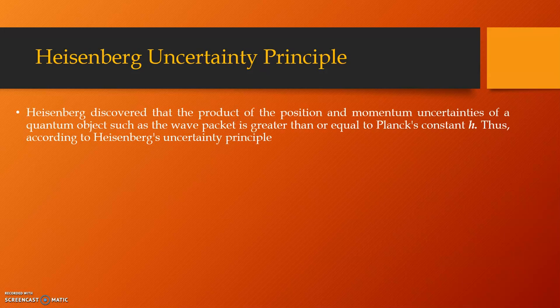Heisenberg discovered that the product of the position and momentum uncertainties of a quantum object such as the wave packet is greater than or equal to Planck's constant h. Thus, according to Heisenberg's uncertainty principle, product of delta x and delta px is greater than or equal to h cut by 2.